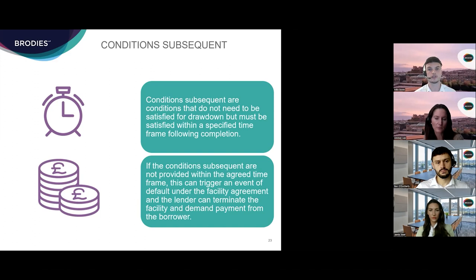For development facilities, the factual CPs will also require the borrower to confirm specific financial covenants relating to the loan to value ratio and loan to cost ratio. In a standard loan, the documentary CPs must be satisfied for the borrower to issue the utilisation request, and the factual CPs must be met on the date of utilisation request and drawdown. However, in a real estate development deal, the borrower can issue the utilisation request prior to the documentary CPs being fulfilled — this allows the first drawdown to be made so the borrower can use the funds to purchase the property, since many documentary CPs can only be produced once the property has been purchased.